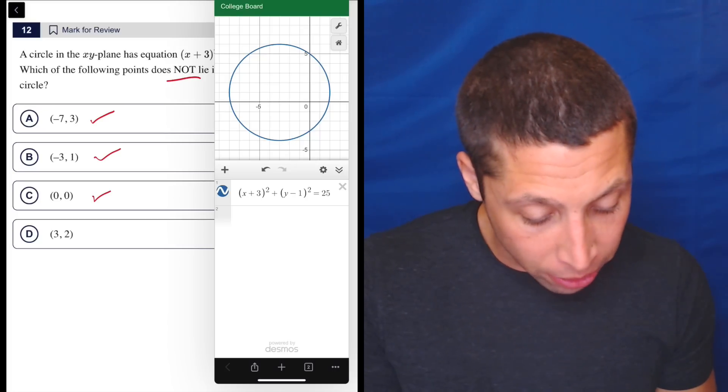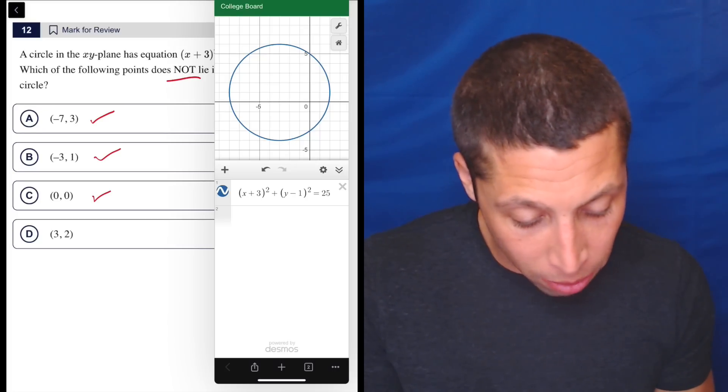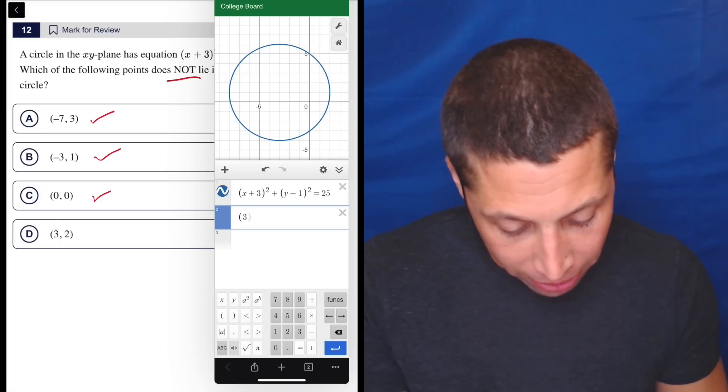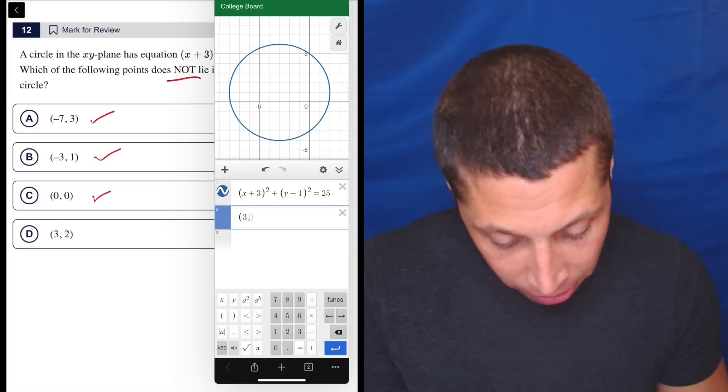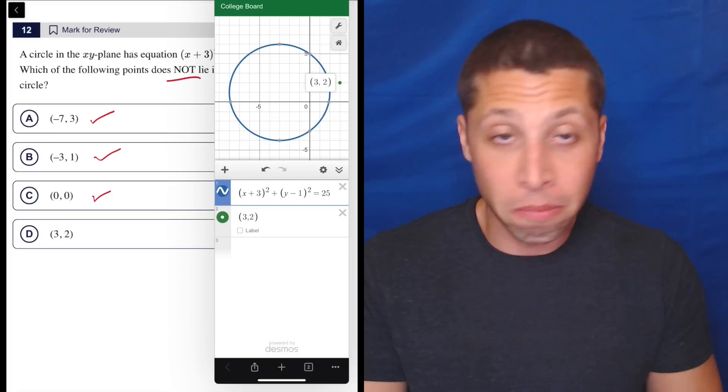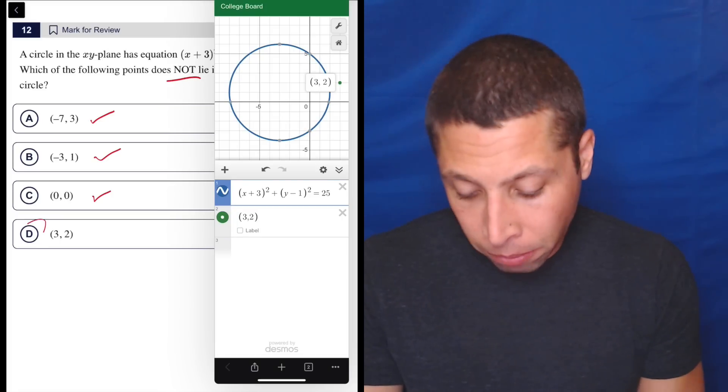So it's probably 3, 2. Now, if I go 3 out and 2 up, I can see that it's not. But if I'm just in any way unsure, just type it in. Guys, you can do points. So 3, 2 is right there. That little green dot outside the circle. Yeah. So not inside the circle, D.